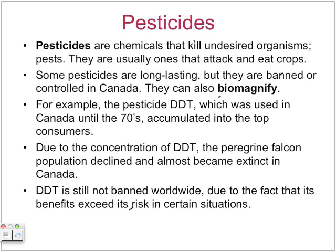Pesticides are chemicals that kill unwanted organisms — usually those that attack crops. Some pesticides are long-lasting, but these are banned or controlled in Canada. Pesticides can also biomagnify, similar to heavy metals. An example of a long-lasting pesticide was DDT, which was used in Canada until the 70s and accumulated into the peregrine falcon, almost making it extinct.